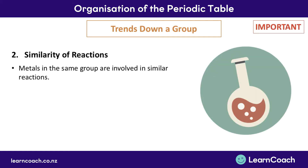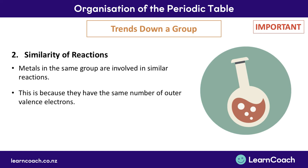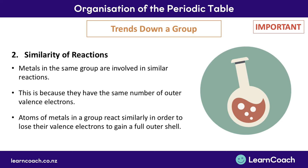Now let's move on to the second trend as you move vertically down a group: the similarity of reactions. Metals in the same group are involved in similar reactions because they have the same number of outer valence electrons. Having the same number of outer valence electrons means the atoms are going to react in a similar way — specifically in order to lose those valence electrons and gain a full outer shell, which makes the atom more chemically stable.